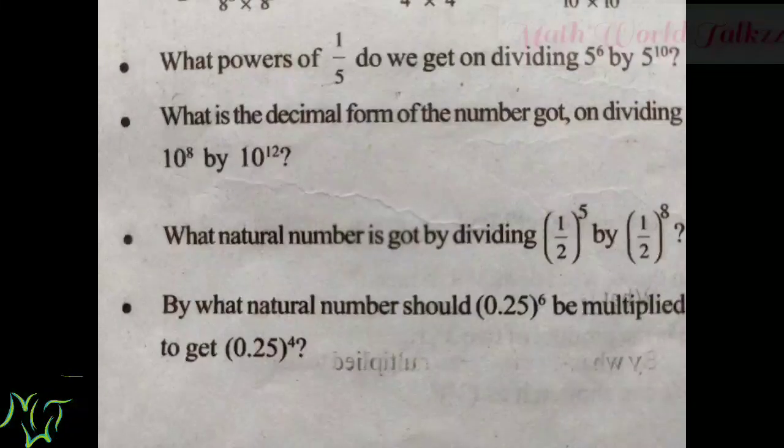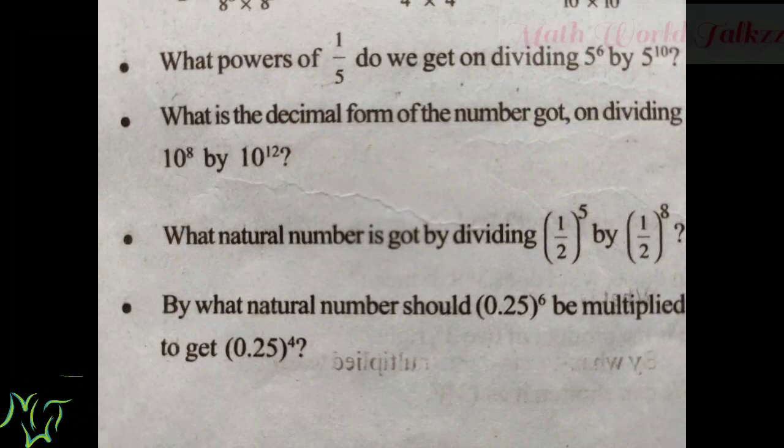2 raised to 3 is 2 into 2 into 2, that is 8. So 8 is the natural number we got by dividing.